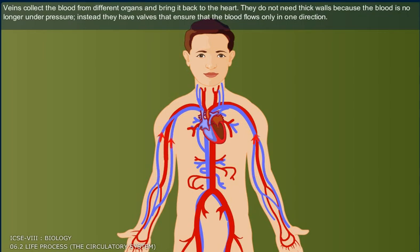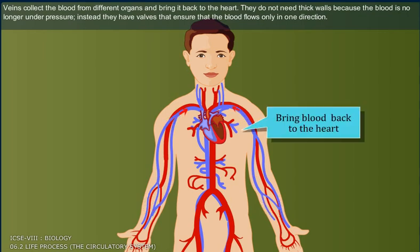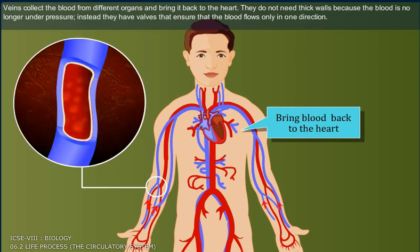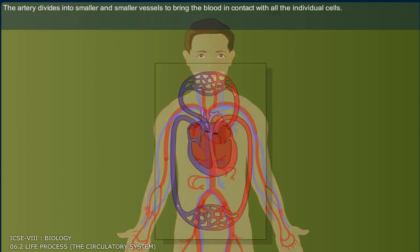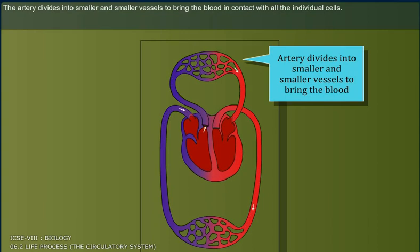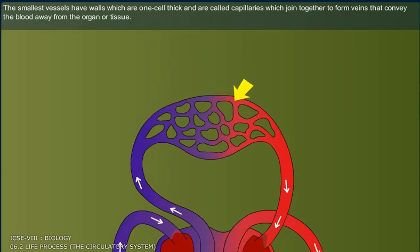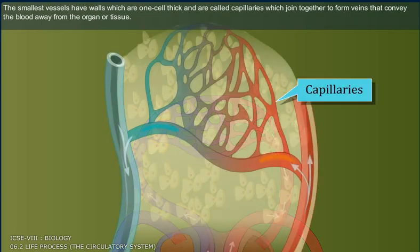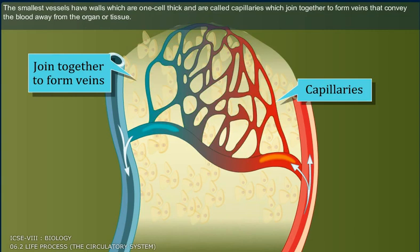Veins collect the blood from different organs and bring it back to the heart. They do not need thick walls because the blood is no longer under pressure. Instead, they have valves that ensure that the blood flows only in one direction. The artery divides into smaller and smaller vessels to bring blood in contact with all individual cells. The smallest vessels, which are one cell thick, are called capillaries, which join together to form veins that convey blood away from the organ or tissue.